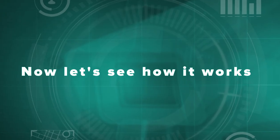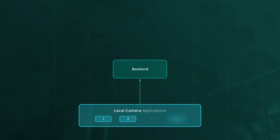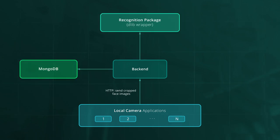Now let's see how it works. CameraApplication uses the OpenCV library to analyze frames of a stream and detect faces, which are identified on the server side by a cross-platform library dlib.